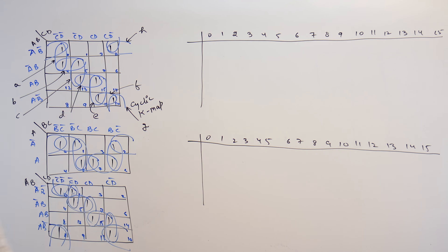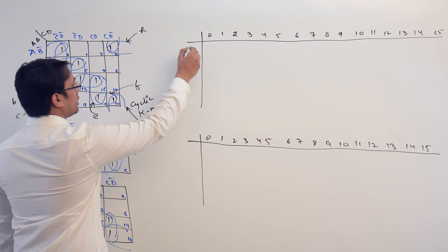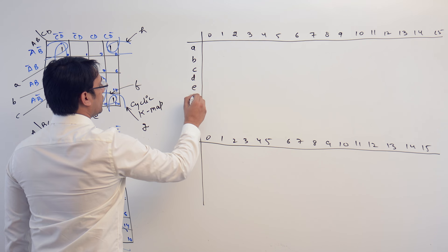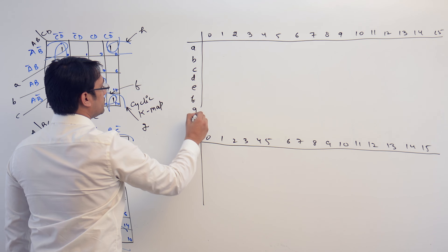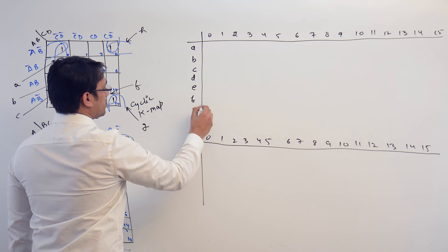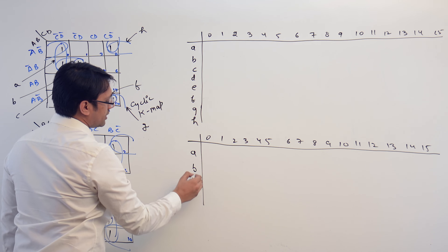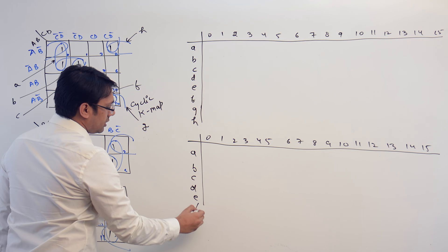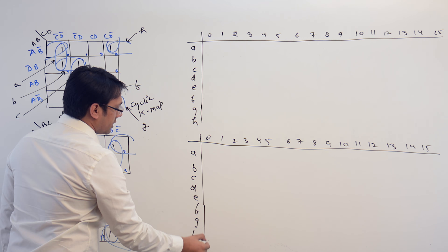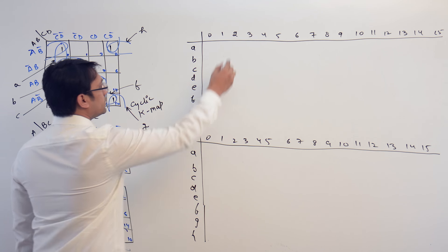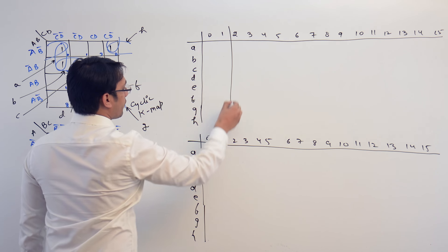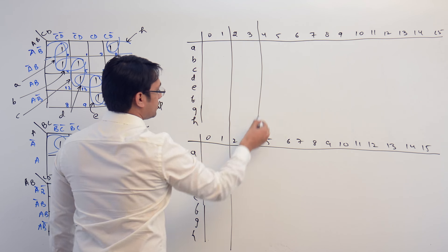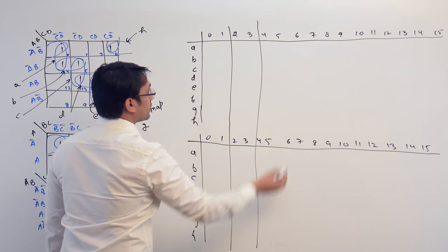So we have subcubes a, b, c, d, e, f, g, and h for the first chart, and again a, b, c, d, e, f, g, and h for the second chart. Naming the subcubes this way will save our time.